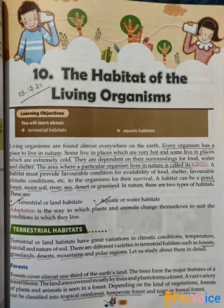There are two types of habitats: terrestrial habitat or land habitats, and aquatic or water habitats. Examples of terrestrial habitats are mountain region, polar region, deserts, grasslands, etc.